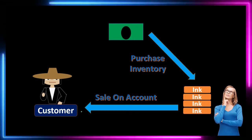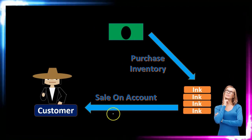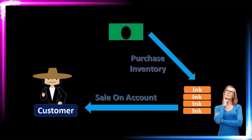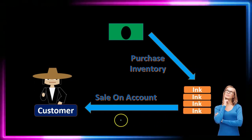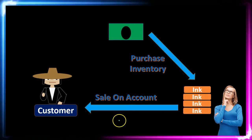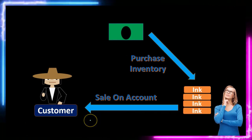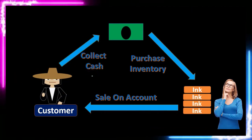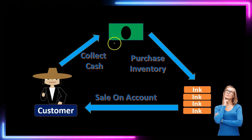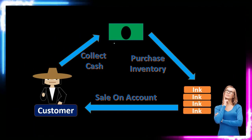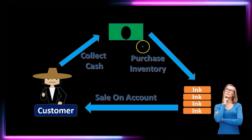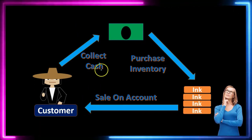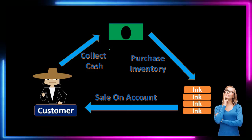When we sell on account, we invoice the client, provide the inventory to the client, and expect to receive payment at a later point in time. When we do receive payment, we collect the cash, decreasing accounts receivable and increasing cash. This is the standard process: we purchase inventory, sell it to the customer, and receive cash.